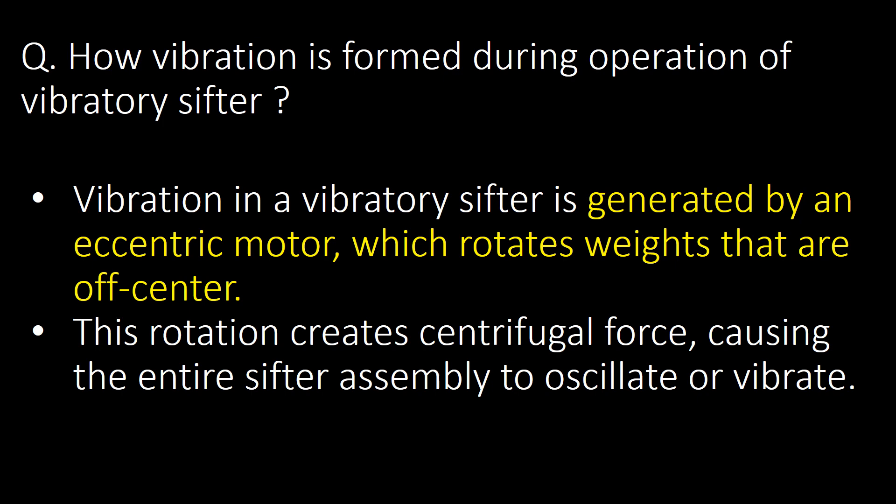How is vibration formed during operation of a vibratory shifter? Vibration in a vibratory shifter is generated by an eccentric motor which rotates off-center weights. This rotation creates centrifugal force, causing the entire shifter assembly to oscillate or vibrate.